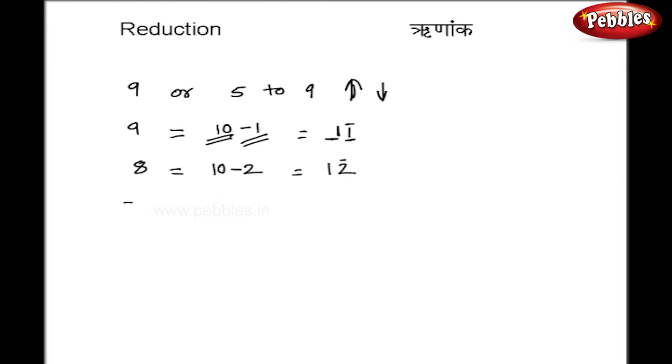Let us take a higher number 37. This number I can write like 40 minus 3. So 40 will be 4 here and minus 3 is minus 3. So my number becomes like this.